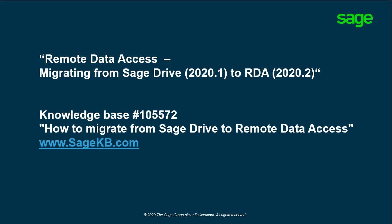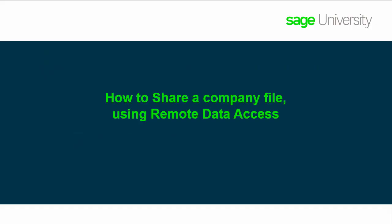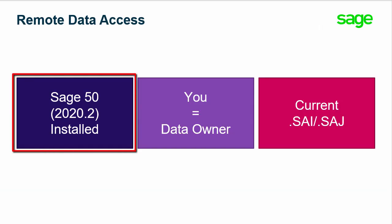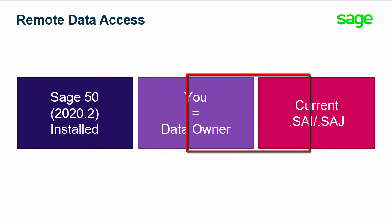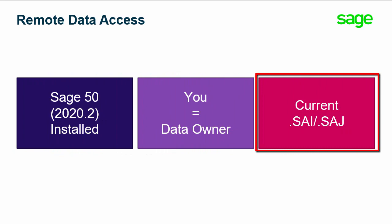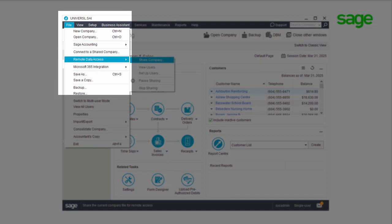Accessible from sagekb.com. Remote Data Access setup is performed from the computer where you currently have Sage 50 Accounting installed, where you are the data owner and have access to the most current copy of your Sage 50 company data file.